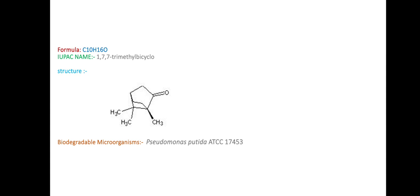This is the formula: C10H16O. The IUPAC naming of camphor is 1,7,7-trimethyl bicyclo. This is the structure. The biodegradable organism for camphor degradation is Pseudomonas putida with strain ATCC 17453.